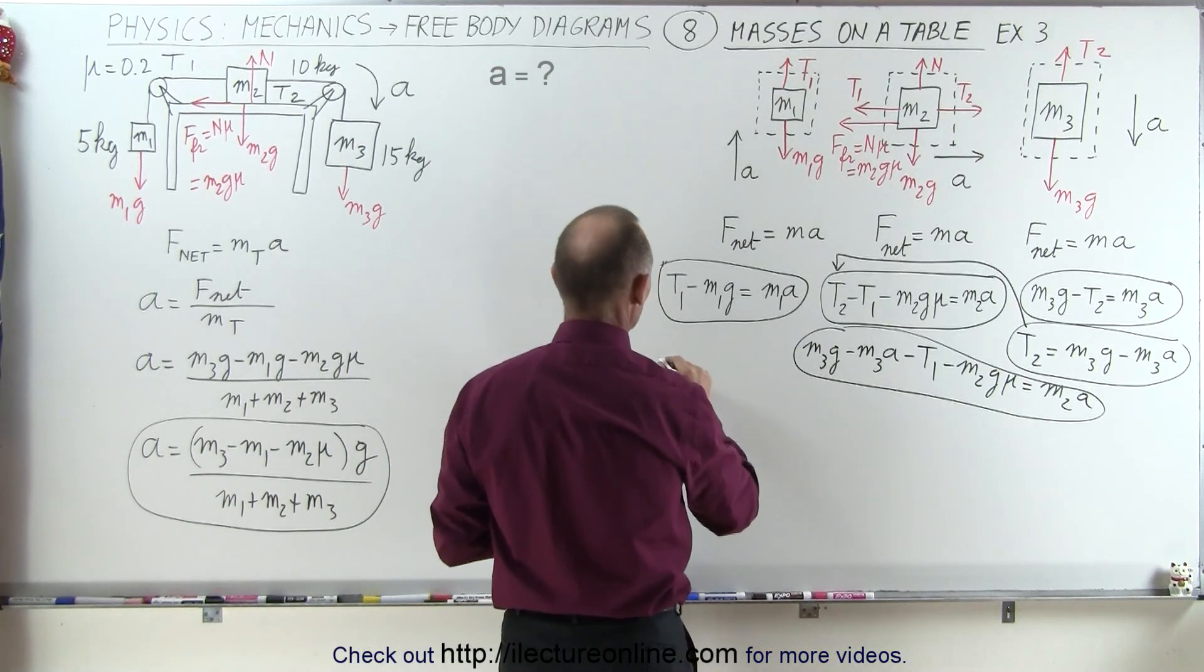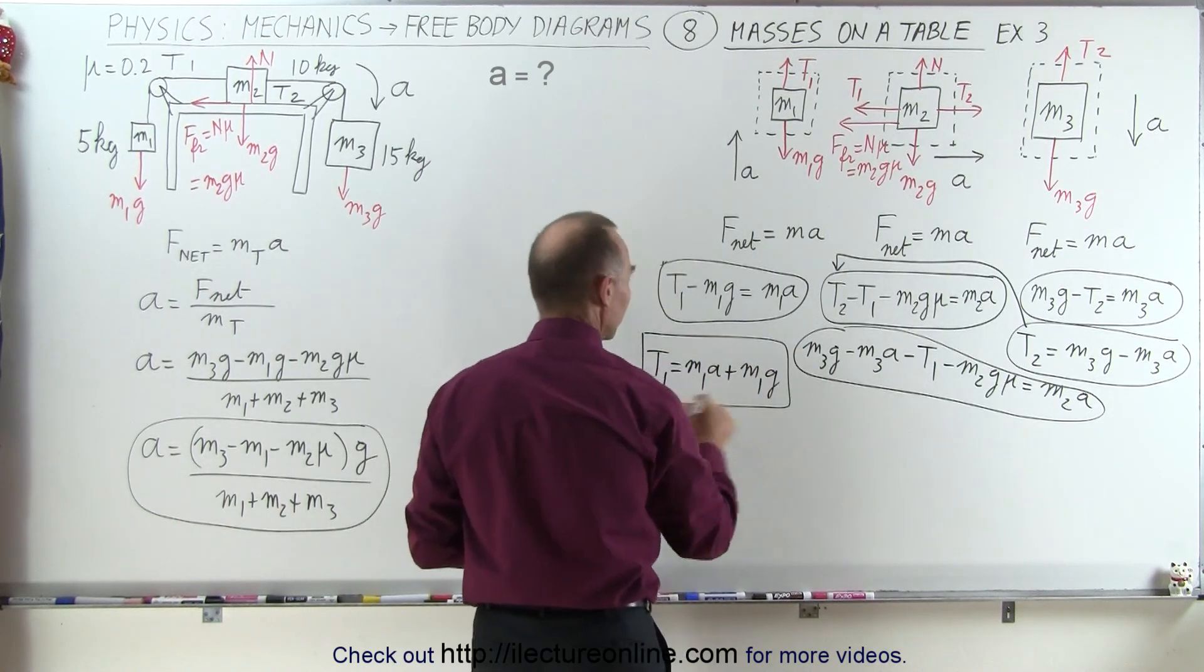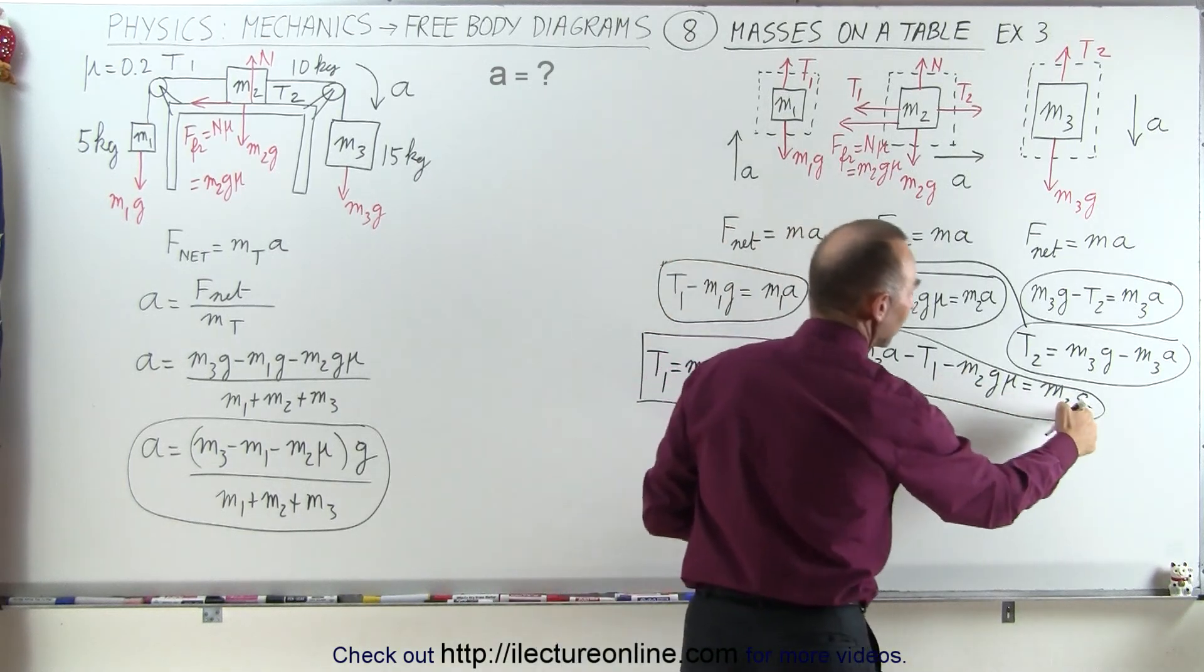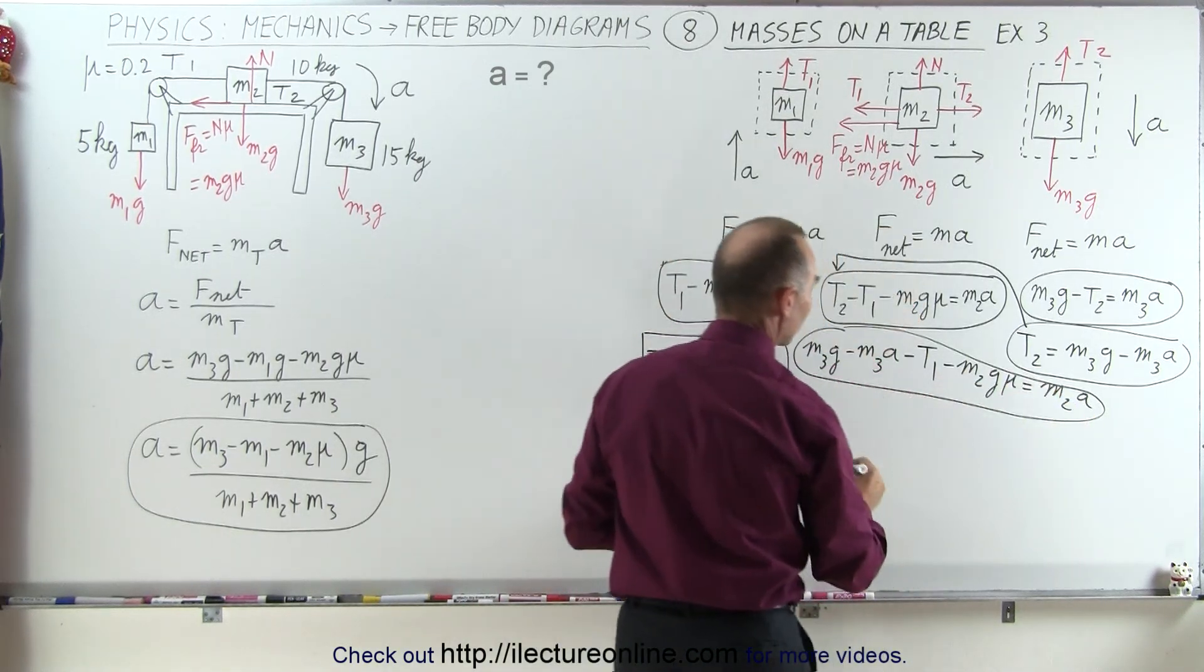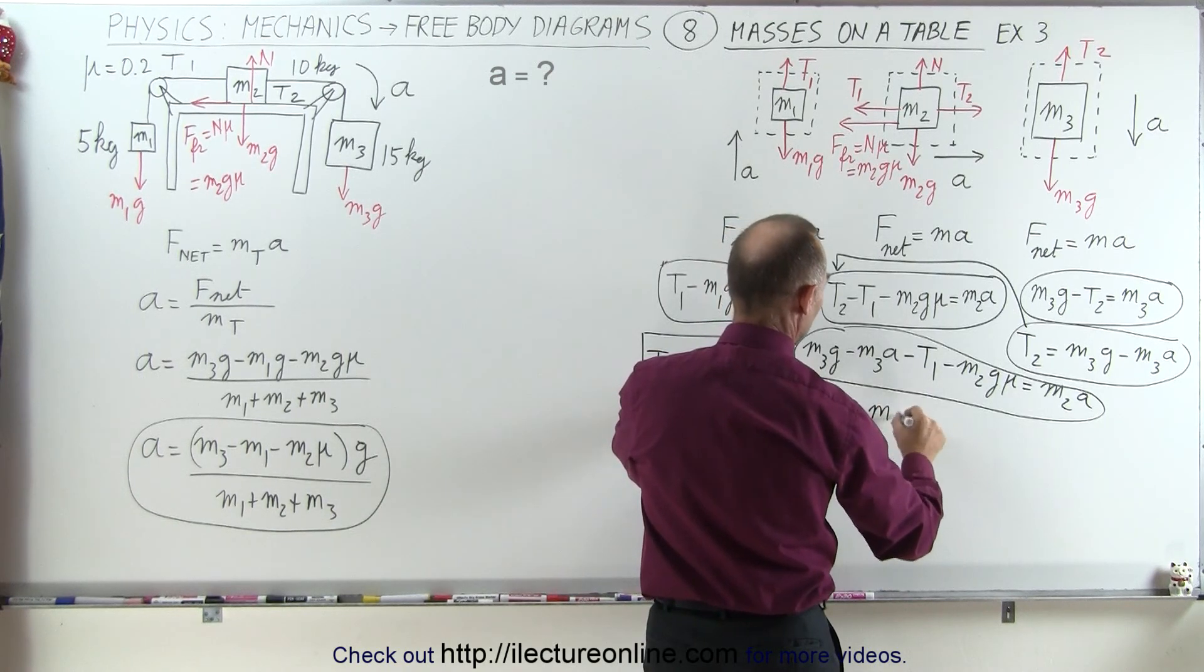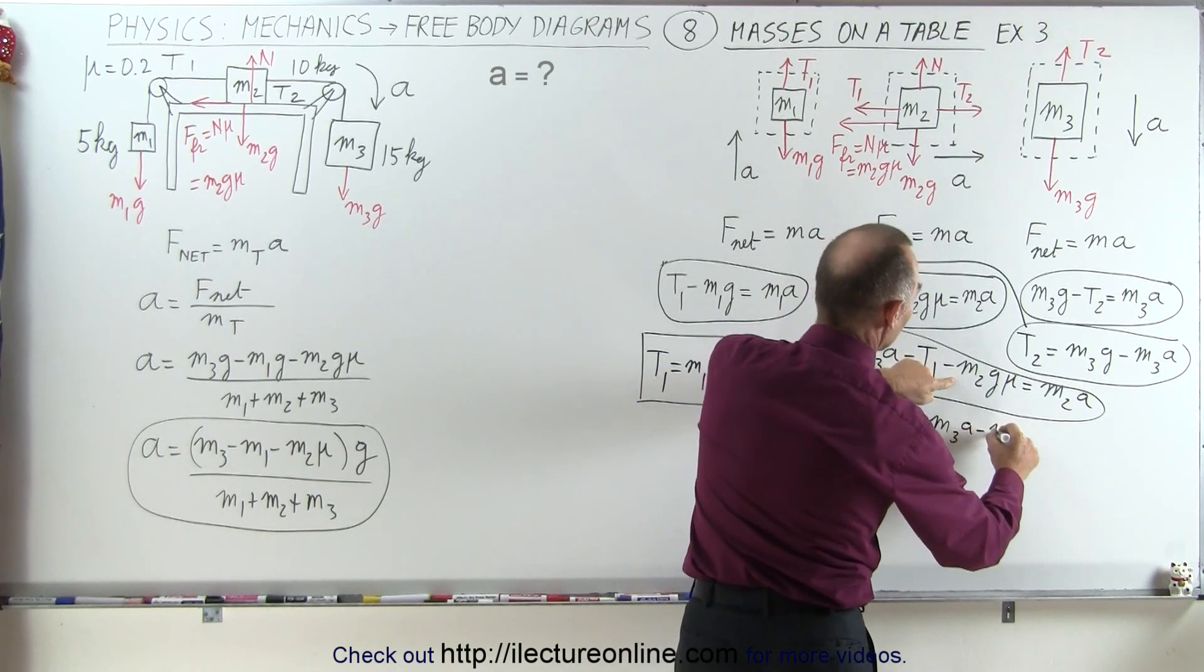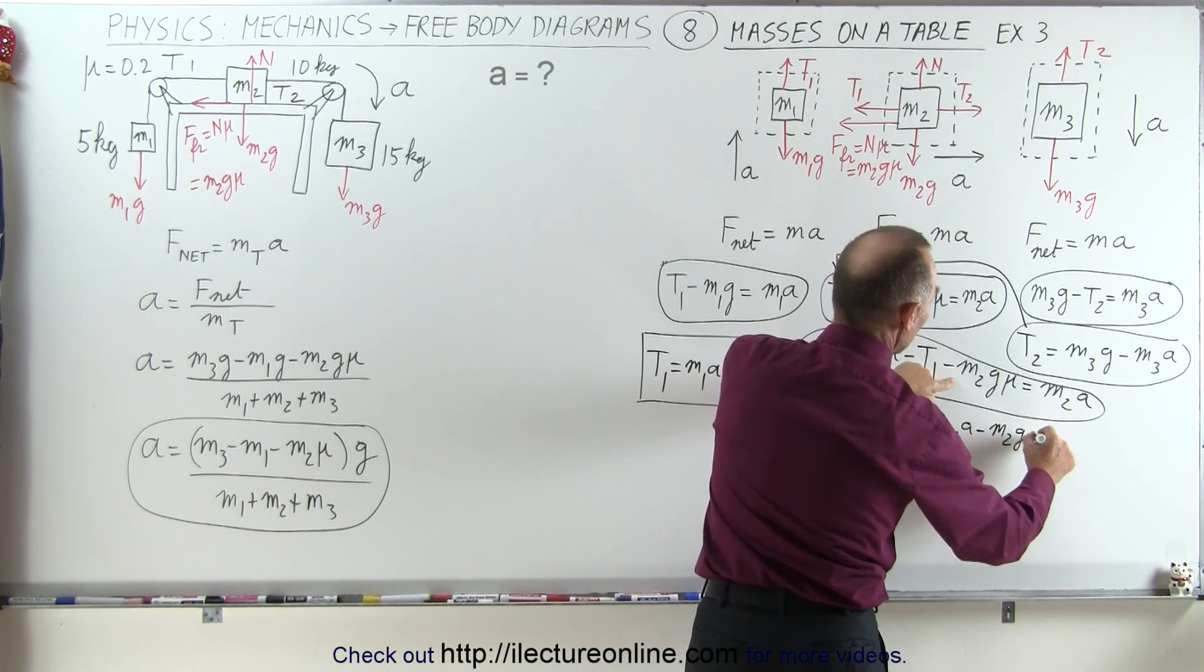So on the first equation, we end up with T1 is equal to M1a plus M1g. For the second equation, we move this to the right and we move this to the left, and switch the equation around. So we get T1 is equal to M3g minus M3a minus M2g mu.